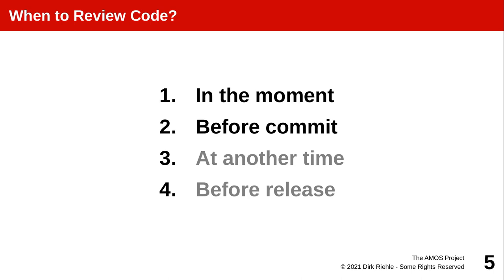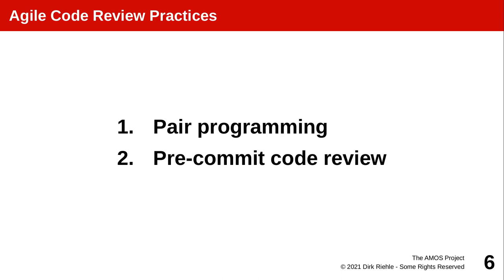In the moment, that's basically what software developers are doing — in their mind they are continuously switching between programming and reviewing the code they write. The first important point in time is when you commit: when you decide to commit your code, you're giving it a certain seal of quality approval. At any other point in time during the project, and before a release or handover to a client, in traditional development that's where most code review would happen, because it was considered expensive.